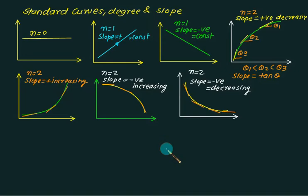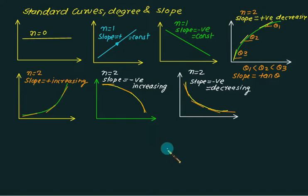The third figure is the slope equal to negative. The fourth figure represents the second order parabola with the positive slope decreasing. In the second row, the first figure indicates the second order parabola with the positive slope increasing, and the fifth figure represents the negative slope increasing and the sixth one represents the decreasing slope.